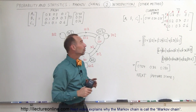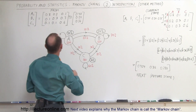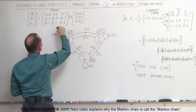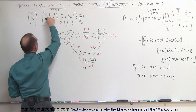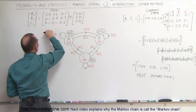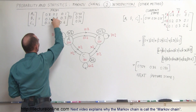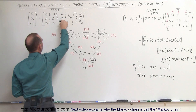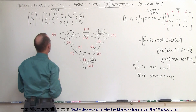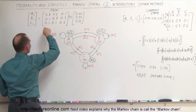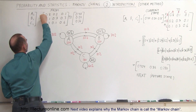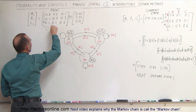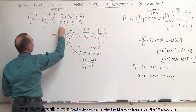Now notice the difference. If we add the numbers vertically right here, they all add up to 1. So this plus this plus this is 1, this plus this plus this is 1, and this plus this plus this is 1. So if we add them in this direction, we get 1 each time.